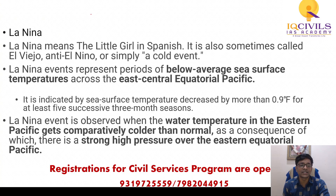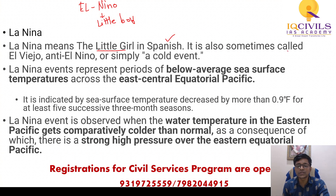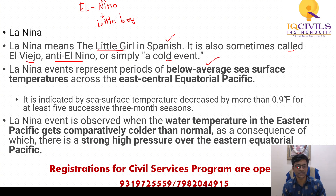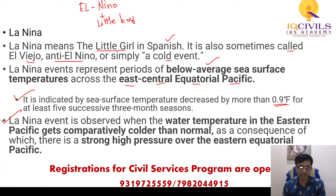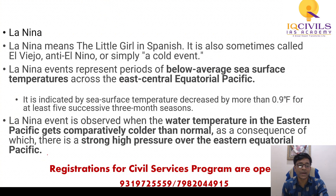Now, La Niña — as mentioned, El Niño means 'little boy' in Spanish, and La Niña means 'the little girl.' La Niña is also sometimes called El Viejo, Anti-El Niño, or simply a cold event. La Niña events represent periods of below-average sea surface temperature across the east-central equatorial Pacific, indicated by sea surface temperature decreased by more than 0.9 degrees Fahrenheit. La Niña is observed when water temperature in the eastern Pacific gets comparatively colder than normal, resulting in strong high pressure over the eastern equatorial Pacific region.